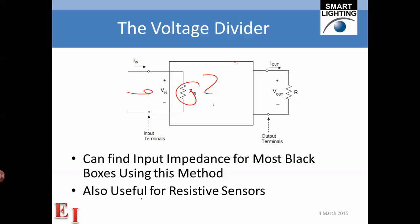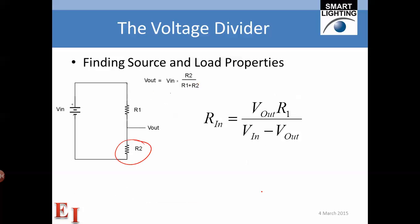Just as important — possibly even more important — is that this can be used for resistive sensors. The voltage divider allows us to figure out an unknown resistance, and if that resistance is proportional to some physical parameter, it might be temperature, force, or something else like light level.